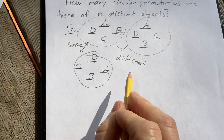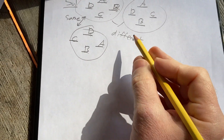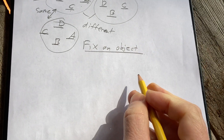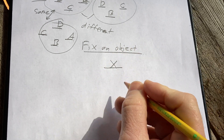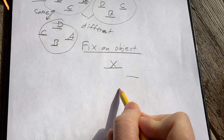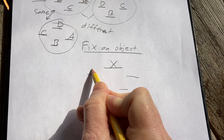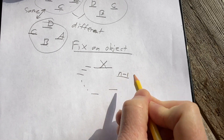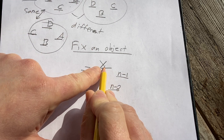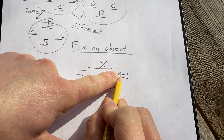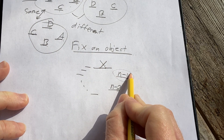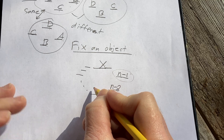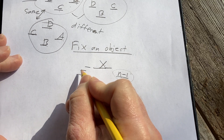So we have N objects. How many ways can we arrange them? Here's the idea: we're going to fix one object. That's fixed. So what about the other positions? We fixed an object, and we have the remaining positions around the circle. If we start with N, there are N minus one choices for the next position, because you've already taken one object out. Then there are N minus two ways to choose what goes in the next position, then N minus three, and so on, all the way down to three, two, one.